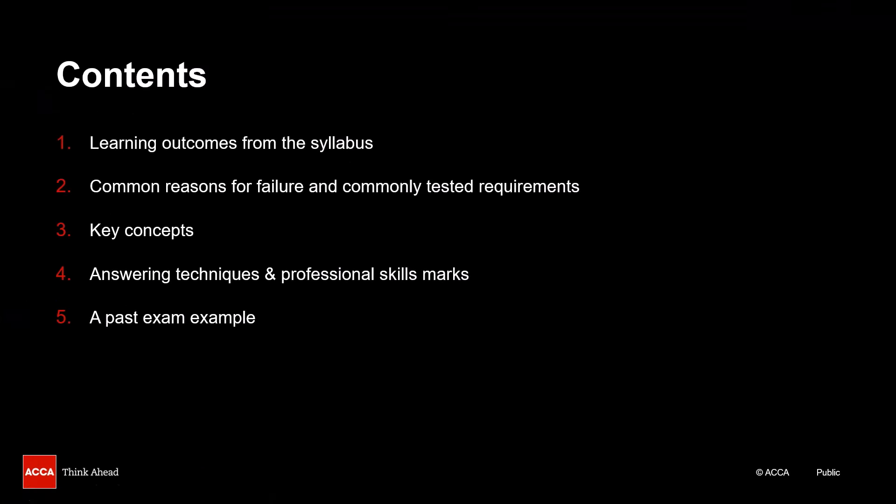As far as exam preparation is concerned, we're going to cover pretty much everything related to this topic. The aim is that by the end of this video you would be ready to tackle all related questions in the exam. We'll review the learning outcomes from the syllabus guide and how they are commonly tested. We will look at the common reasons for not being able to get the available marks in the exam, but I wouldn't want you to worry too much about that. The entire purpose of this video is to revise the key concepts and understand the answering techniques which automatically incorporate your technical as well as professional skills marks. We know that in Advanced Audit and Assurance practice is the key to passing. We will therefore wrap this all up by applying the knowledge that we have learned and the answering techniques to a question extracted from the past exams.